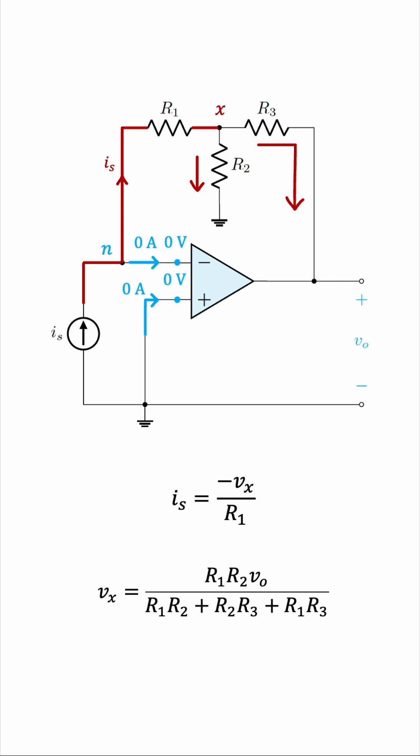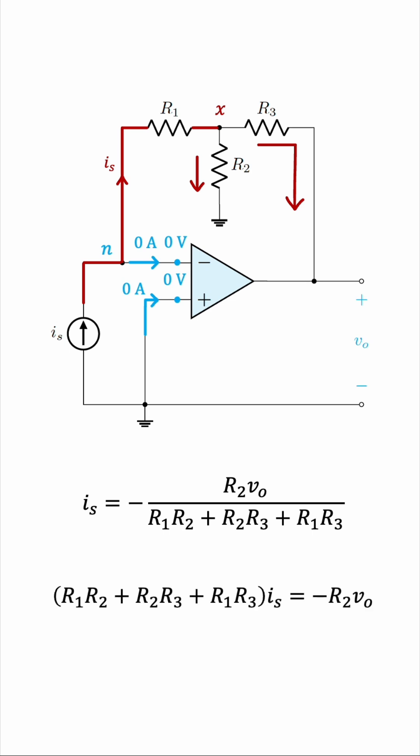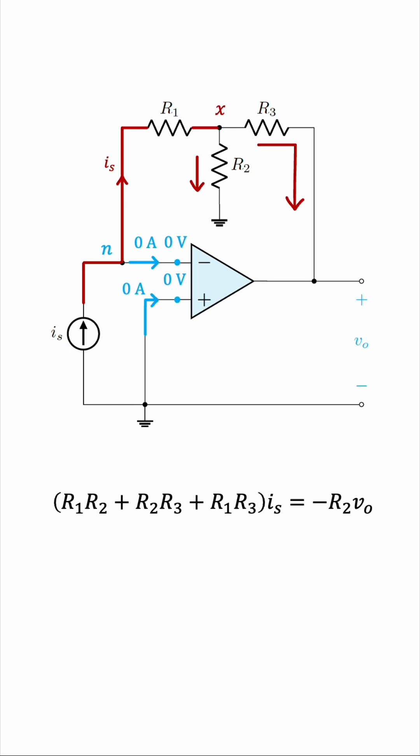Notice IS is negative Vx over R1. So this fraction we see for Vx will lose the R1 in the numerator, and it'll have a negative sign as well. So IS will be negative R2 V0 over the same denominator. So now we have an equation expressing IS in terms of V0, and we only have the resistors, so this is exactly what we aimed for.